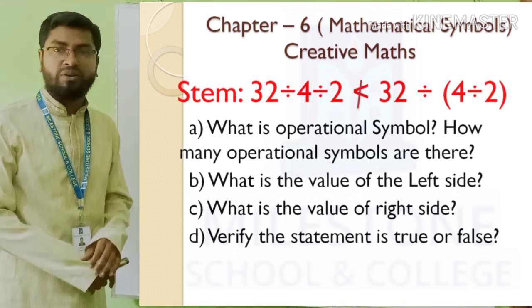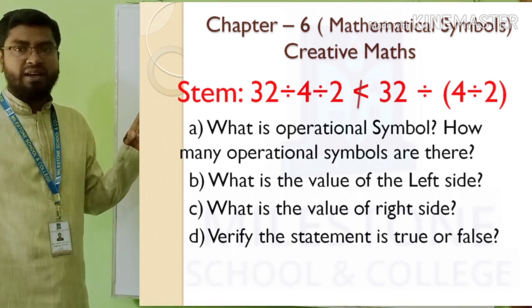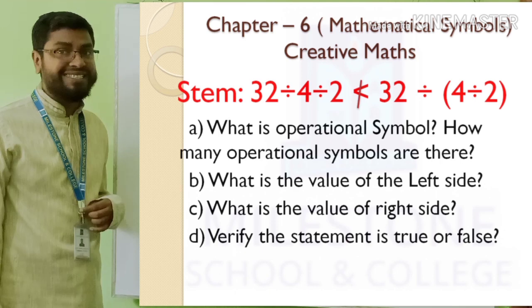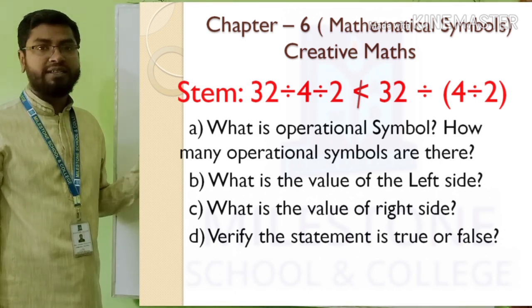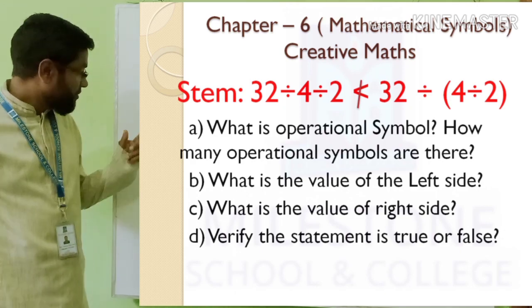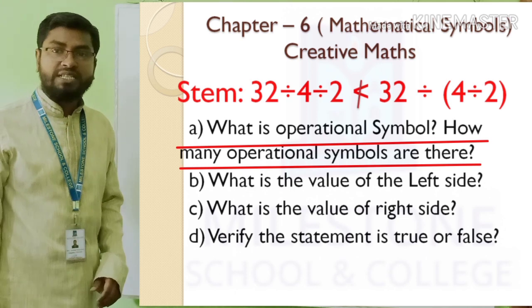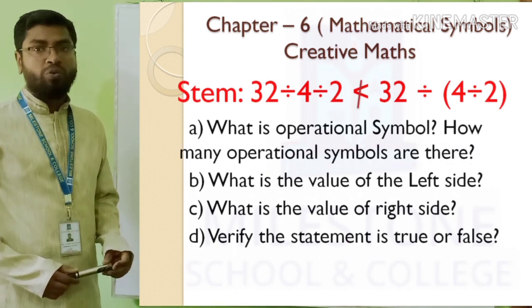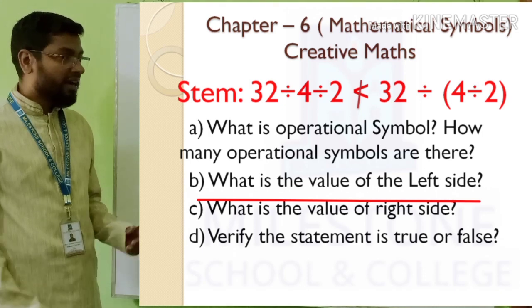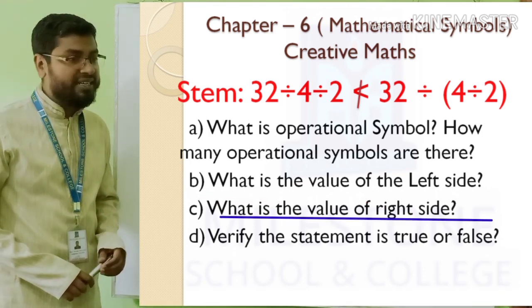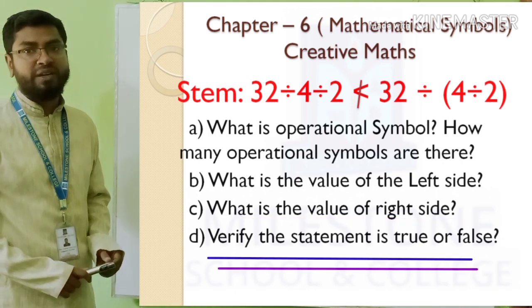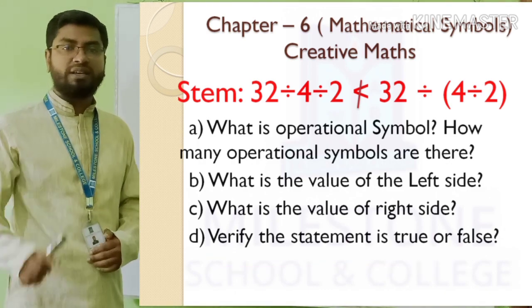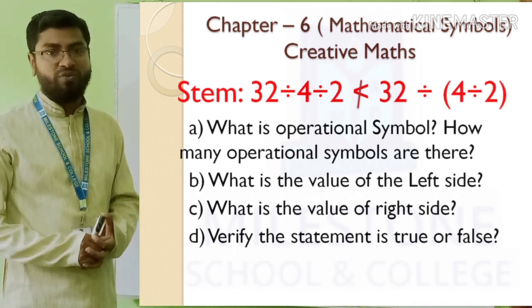See the creative math. A stem — what is a stem? The first one, the red color one is a stem: 32 divided by 4 divided by 2 is not less than 32 divided by bracket 4 divided by 2 bracket close. First question: what is the operational symbol and how many operational symbols are there? Second: what is the value of the left side? Third: what is the value of the right side? D number: verify the statement is true or false. Please collect this question in your copy, then we will start solving.